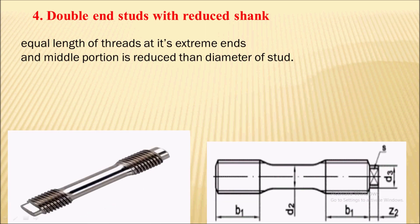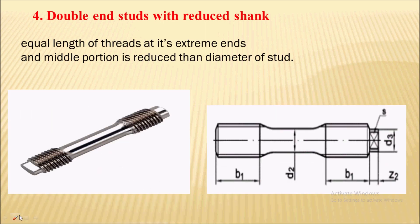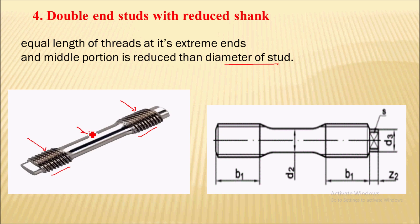Next is the double end stud with reduced shank. Here you can see equal length of thread at its extreme ends, and the middle portion is reduced compared to the diameter of the stud. The thread diameter will be slightly more than the diameter of this middle portion, which is also called the shank. That is called a double end stud with reduced shank.